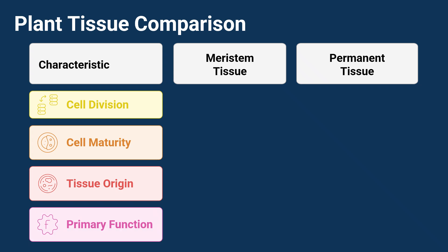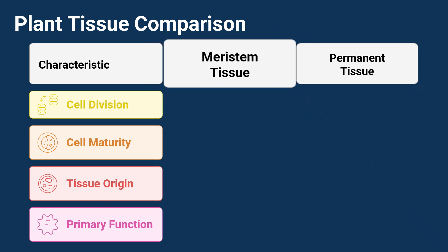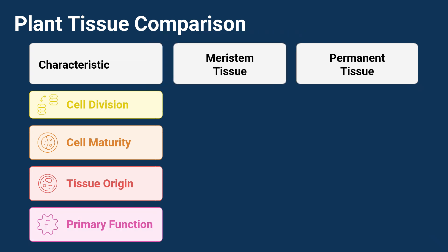Meristematic tissue. Meristematic tissue are like the plant's growth engines. They're made up of cells that are always, always dividing. That's why plants can keep growing bigger and taller their whole lives.